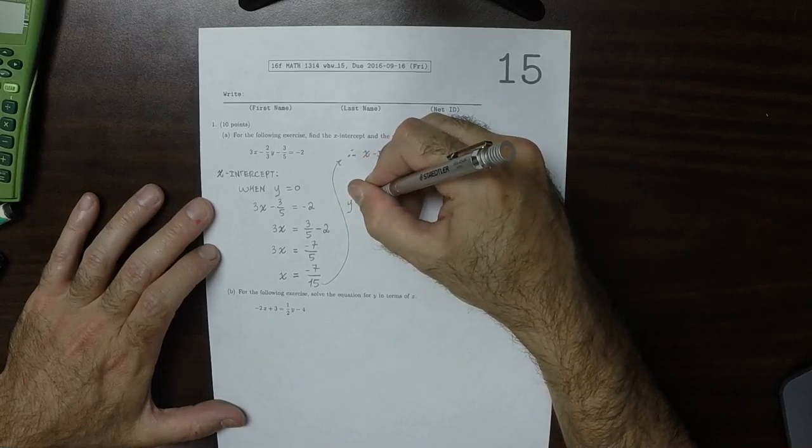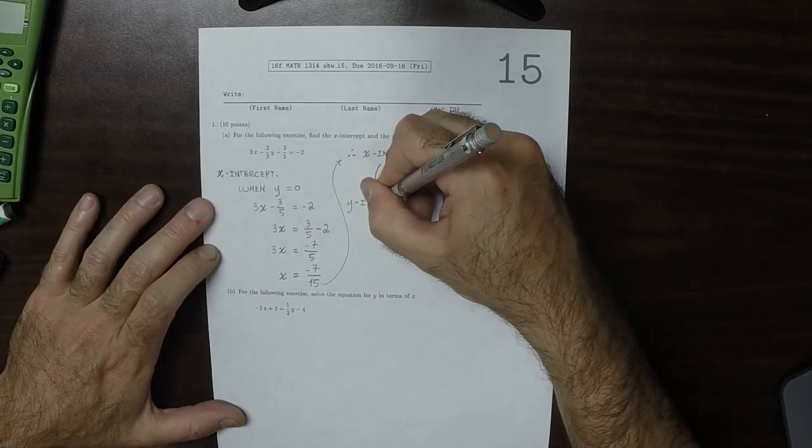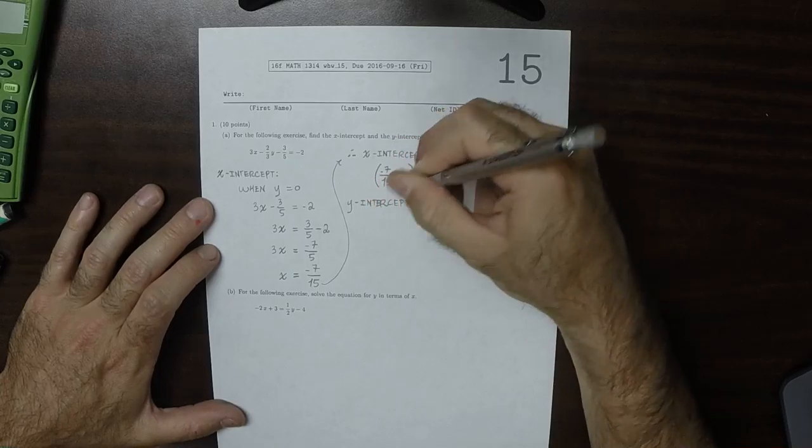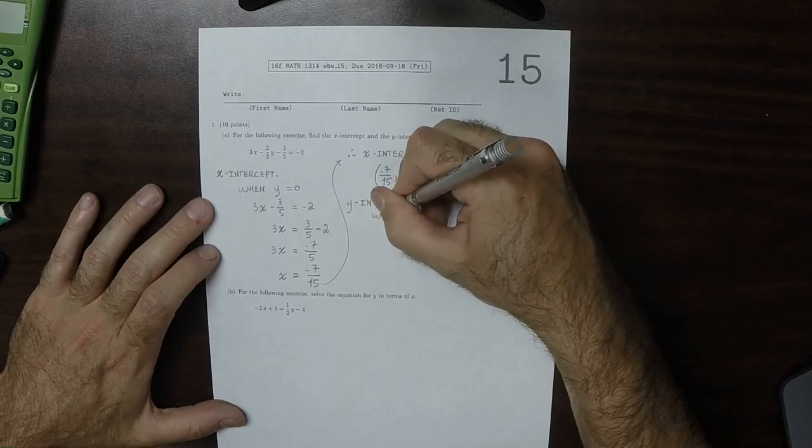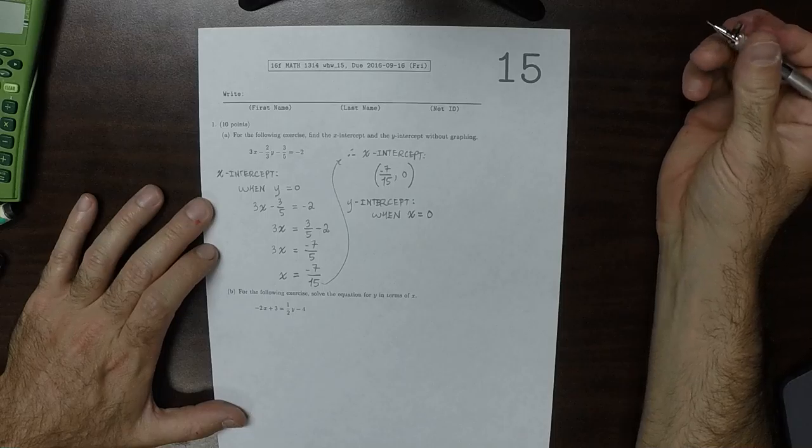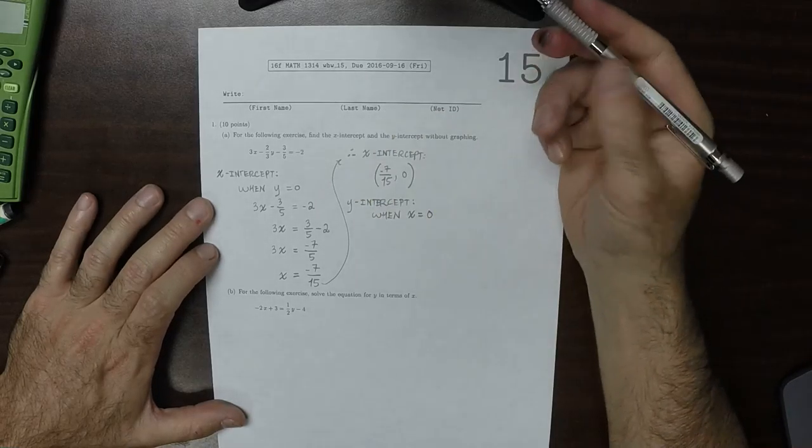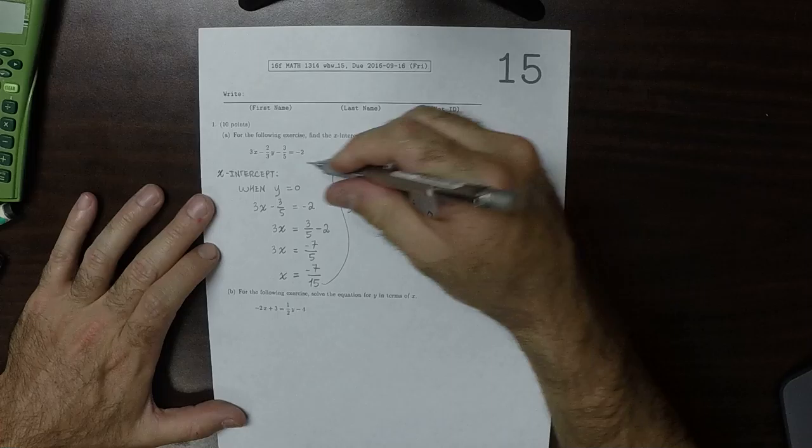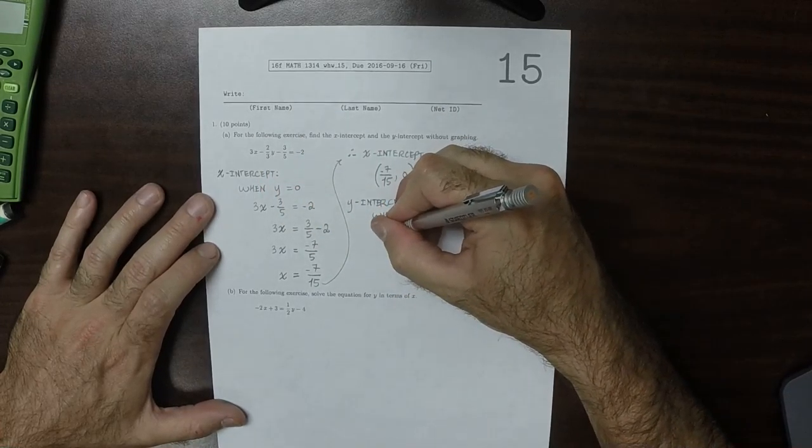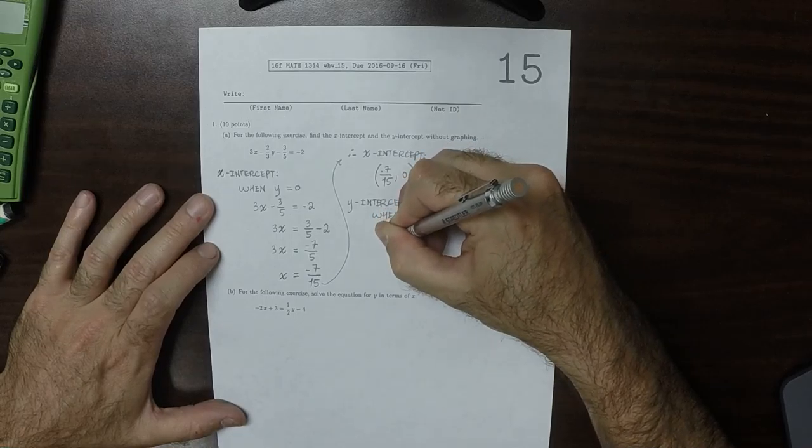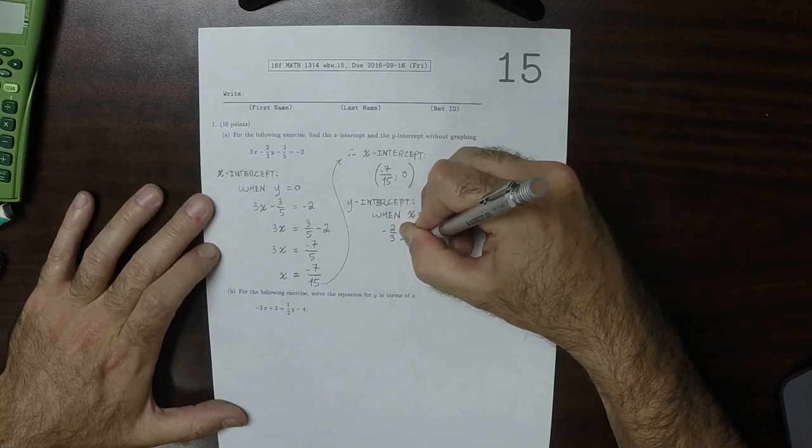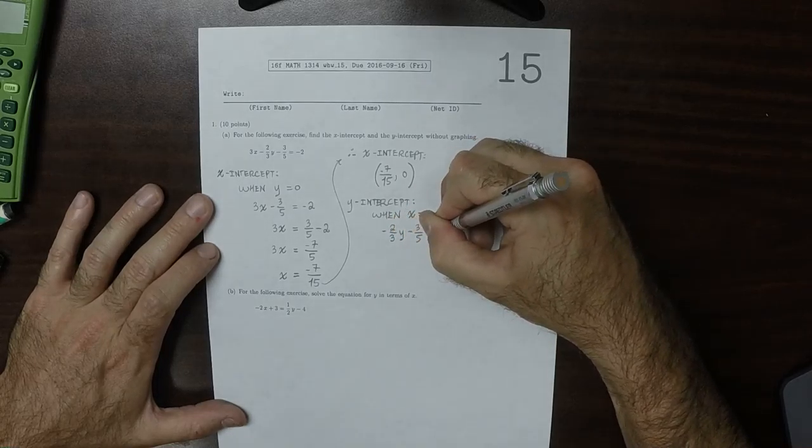The algebraic condition for a y-intercept, that is when x is 0. So we'll plug this in, and we'll plug x is 0 into there. So that would be 0 and then minus 2/3 y minus 3/5 is negative 2.